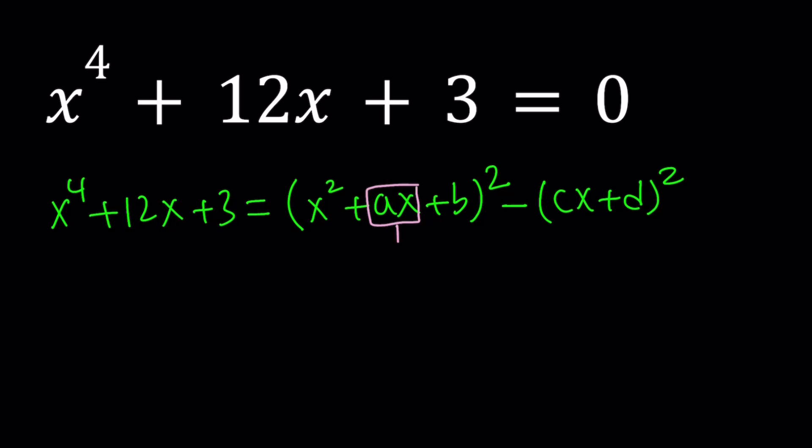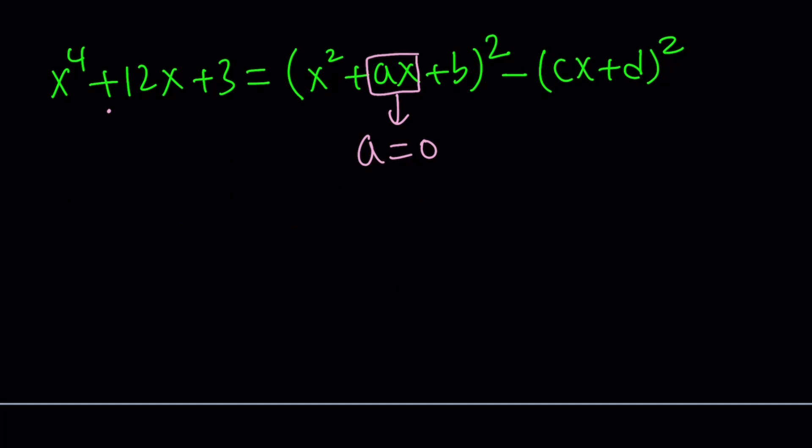In other words, a equals 0. Make sense? Because we don't have any x cubed. Why did we not check for x squared? We're going to do that later. So let's go ahead and rewrite this because this is going to be nicer.